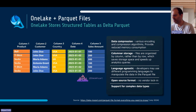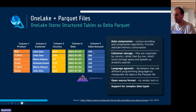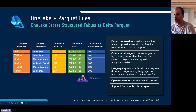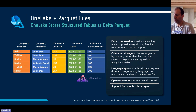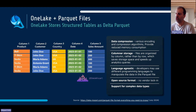Parquet files are, you could say, a CSV on steroids — they use columnar storage. Instead of looking at data row by row, for example if I want to see sales for the product T-shirt, in a normal CSV I go to the first row, check if it's a T-shirt, then the next row, and so forth. With Parquet files it's different: if I only want sales for a product, I only pick up the product column and the sales column. This allows me to be much faster, more efficient, and reduces memory consumption.